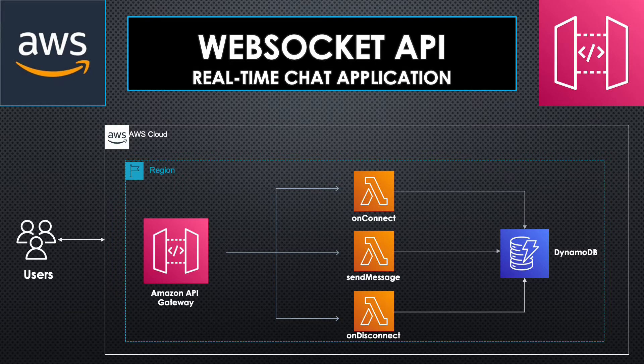WebSocket APIs support two-way communication — both the users and the backend can send messages back and forth once connected. They are used in real-time applications like chats, broadcast messages, or real-time dashboards. You can create WebSocket APIs in AWS using the API Gateway service. The sample use case we are going to see today is a real-time chat application.